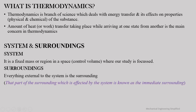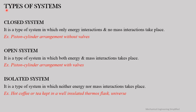We have two important terms: system and surroundings. A system is a fixed mass or region in space — a control volume — where our study is focused. It is essentially that part of the universe where our study is focused. Everything external to the system is known as the surroundings, and that part of the surroundings which is affected by the system is known as the immediate surroundings.